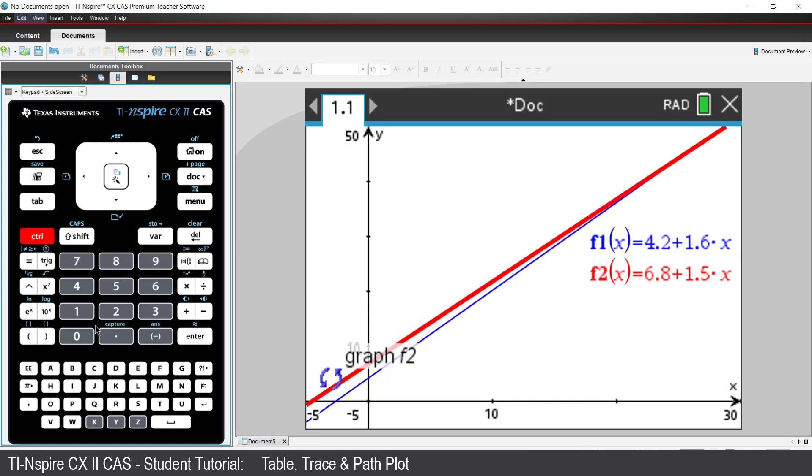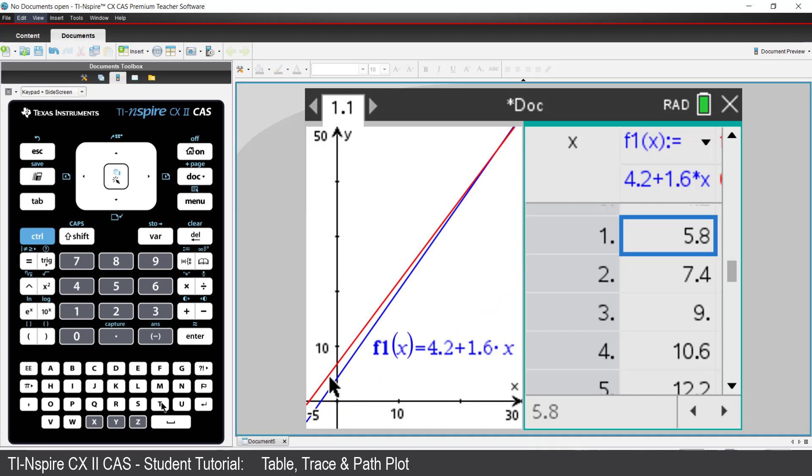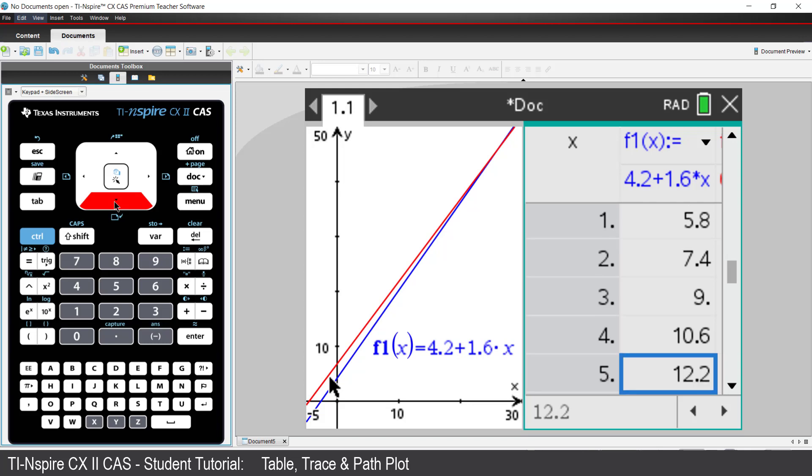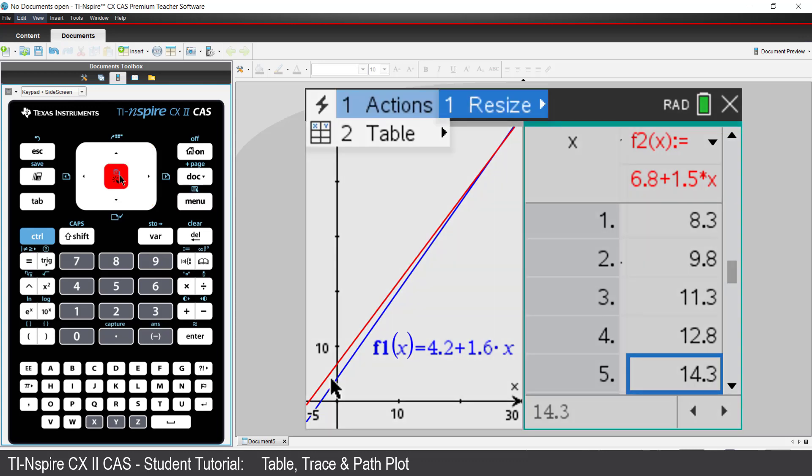Press CTRL followed by T to display a table of values. We can scroll through and see the taxi fare in 1 kilometre increments. Arrow across to see the rideshare table. We could adjust the column width to see the comparison of the two.